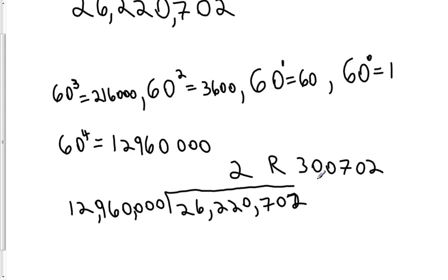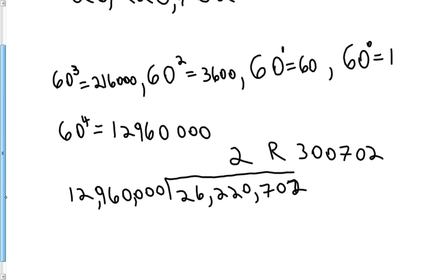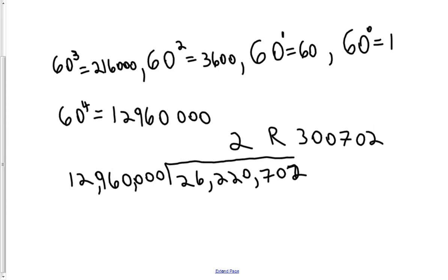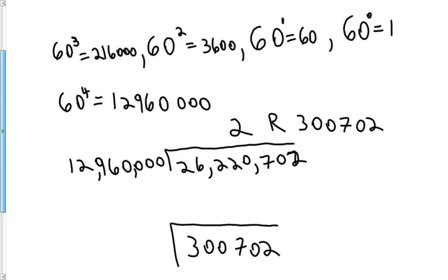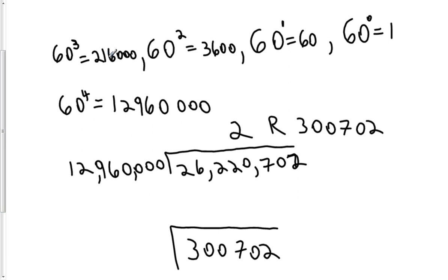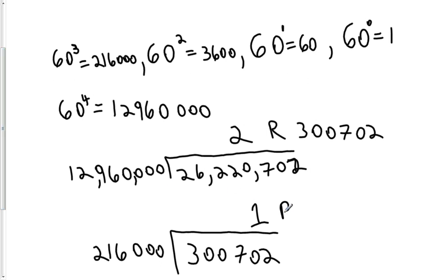What we're going to do with the remainder is we're going to divide the next place value down into the remainder to see what numeral we need to put in that place value. So we're going to take our 300,702 and divide it by the next place value down, which is the 216,000 place. It turns out this goes in one time, and the remainder for this division comes up to be 84,702.